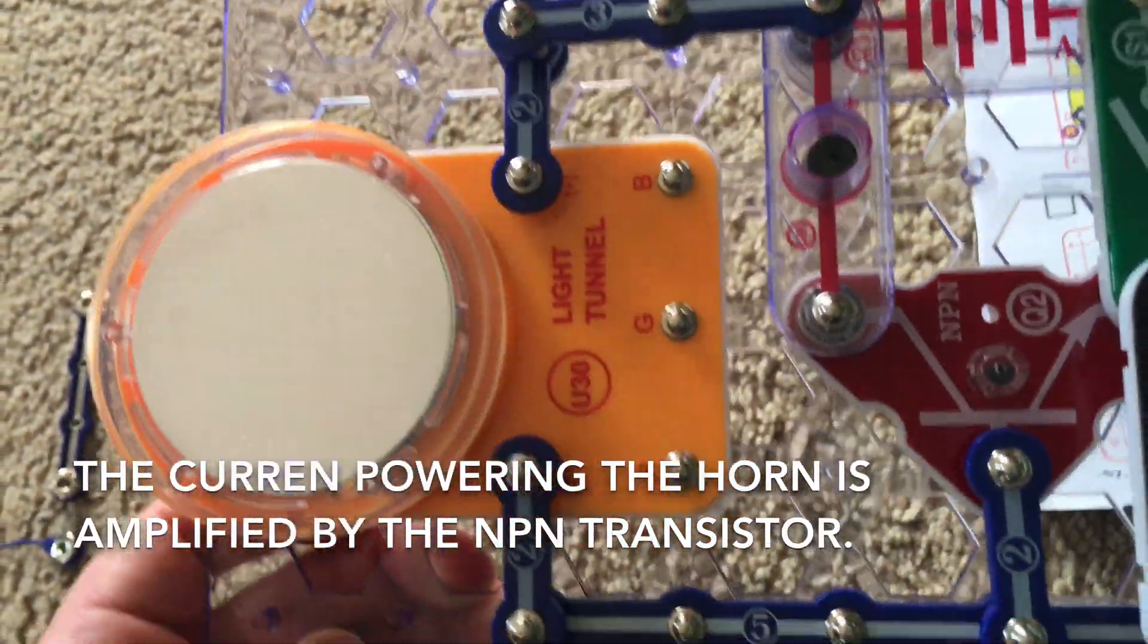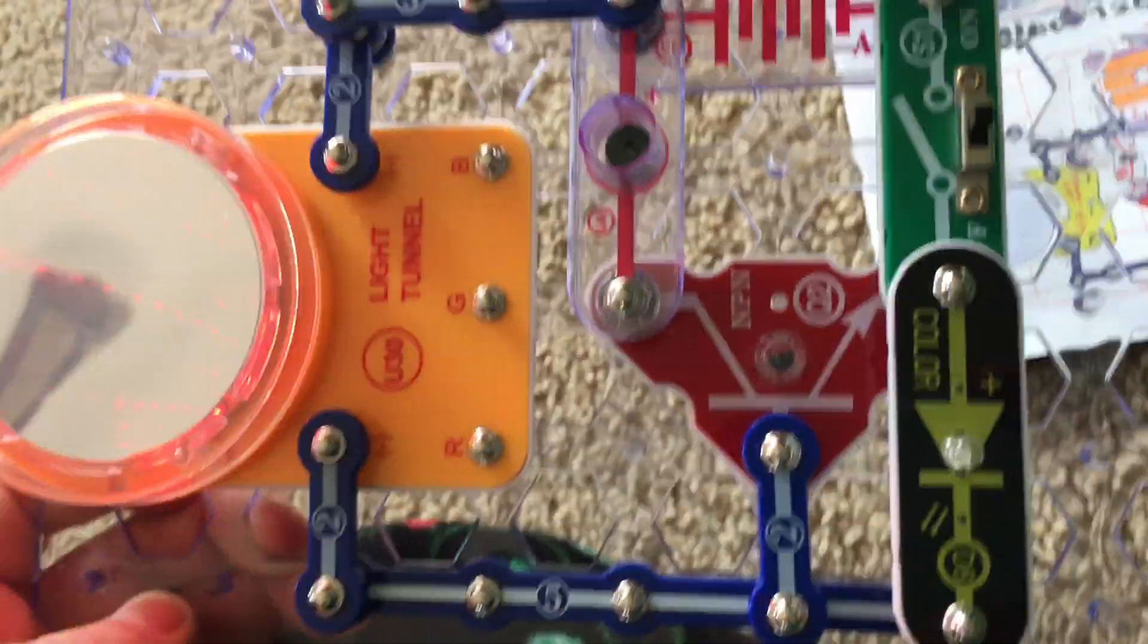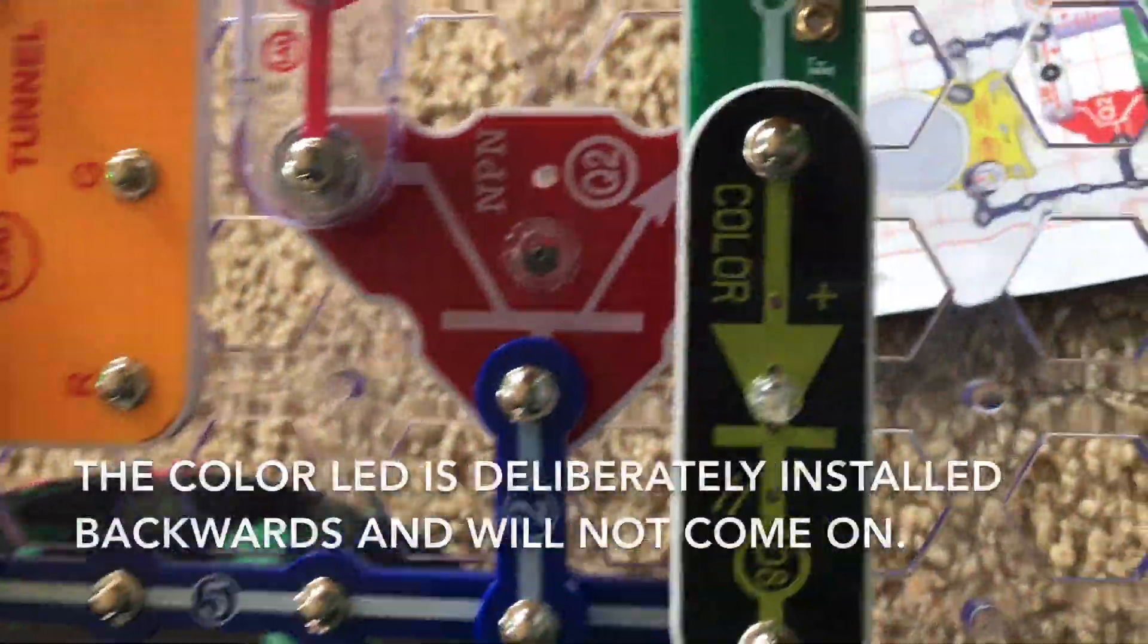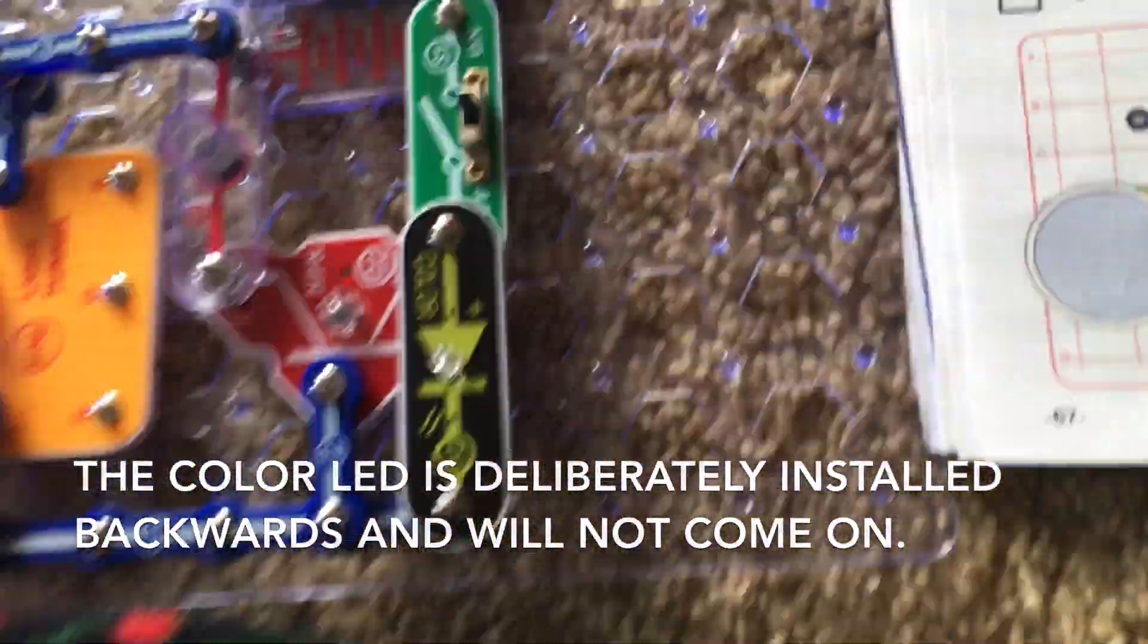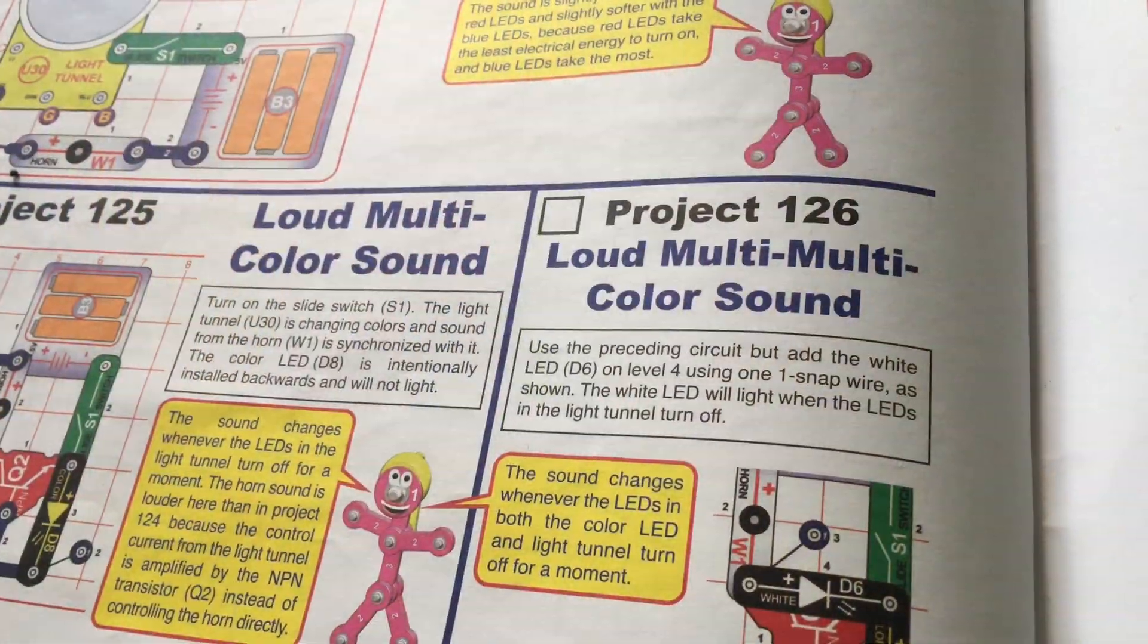Also, the horn is louder in this project than the previous one because the current is amplified by the NPN transistor. The color LED is intentionally installed backwards and it will not light.